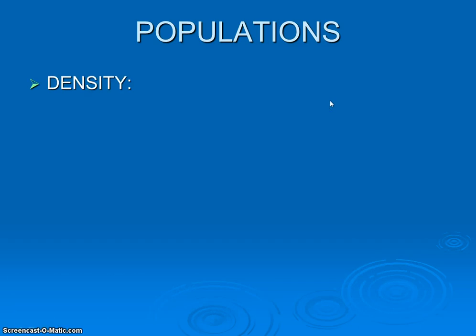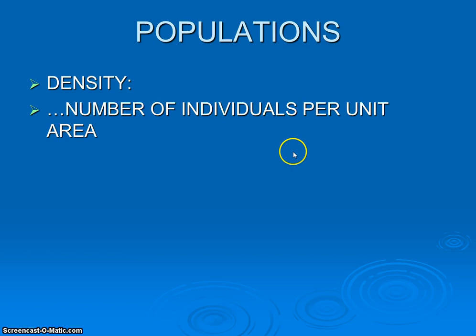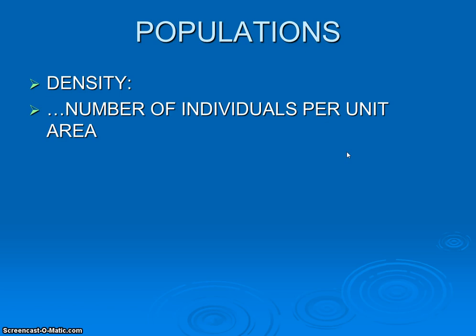Another very important way to describe a population — which we'll look at more later — is the idea of density: the number of individuals per unit area. We're not just talking about the total number of individuals; we're also concerned with the area. For example, little Rhode Island, the tiniest state, actually has a very high population density, even though our total population is not extremely large compared to, say, Nevada. However, our density is very high.